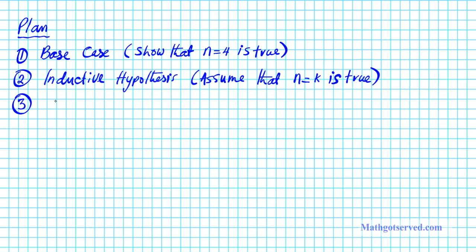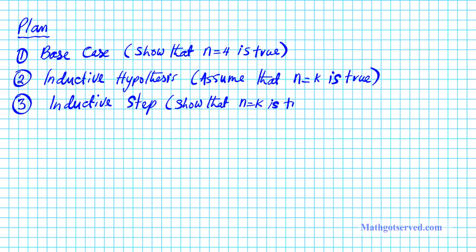And then lastly, part three is the inductive step, where we're going to be taking a step up from our inductive hypothesis. For the inductive step, we just have to show that if n equals k is true by assumption, it follows that the next step, n equals k plus 1, is also true. And if we can carry out all these three steps, then we've shown by induction that the statement is in fact correct.